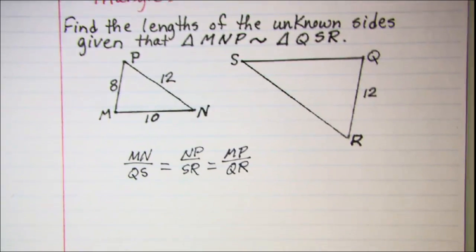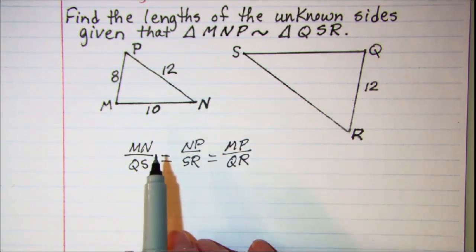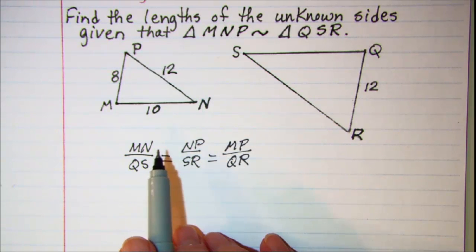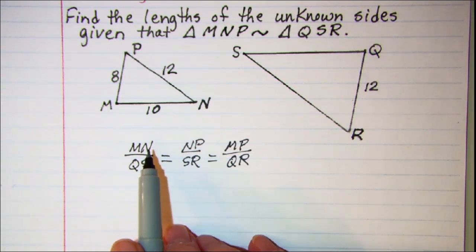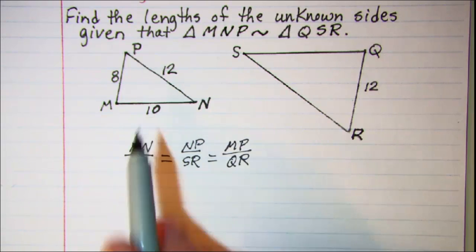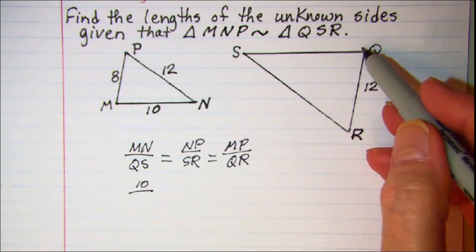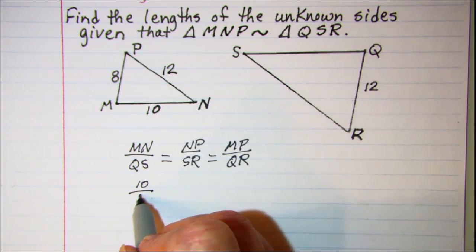So now all we need to do is put the values in for the known sides and then we'll use proportions to find the unknown sides. MN is 10, QS we don't know so we'll leave that blank.